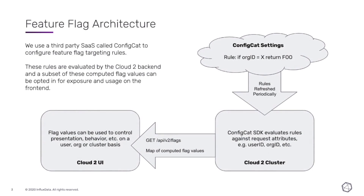Before we dive in, let's go through a quick overview of the feature flag architecture we've built out for Cloud2. We're using a third-party SaaS product called ConfigCat, and that's where we configure our feature flag targeting rules. We set those rules up in the ConfigCat console and they're saved in the cloud, then pulled down periodically by the Cloud2 cluster backend. Those services pull down these rules and then use the user ID, org ID, and other attributes associated with API requests to evaluate those rules and compute a specific flag value for each API request that comes in.